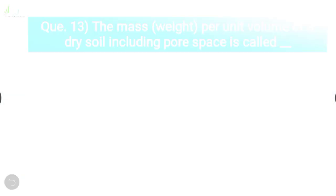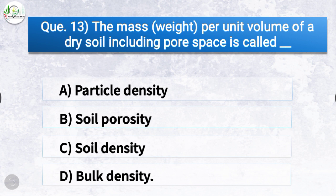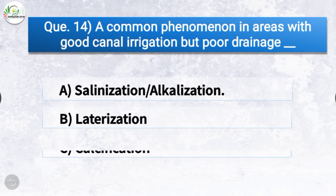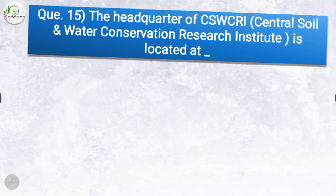Question number thirteen: the mass per unit volume of a dry soil including pore space is called bulk density. Question number fourteen: a common phenomenon in areas with good canal irrigation but poor drainage is called? The correct answer is option A, salinization or alkalization. Moving on to the next question: the headquarter of CSWCRI, which stands for Central Soil and Water Conservation Research Institute, is located at? The correct answer is option D, Dehradun.